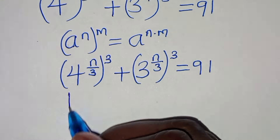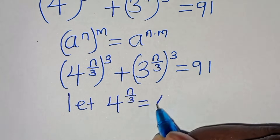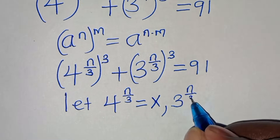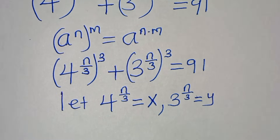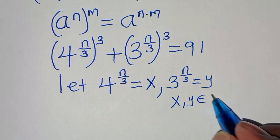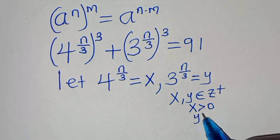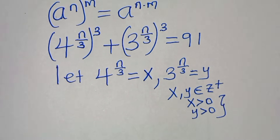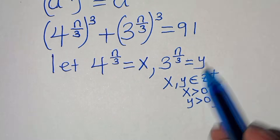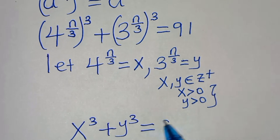The next step: we let 4 to the power of n/3 equal x, and 3 to the power of n/3 equal y, where x and y are members of positive integers, with x > 0 and y > 0. We now express the equation in terms of x and y, so that we have x cubed plus y cubed equals 91.